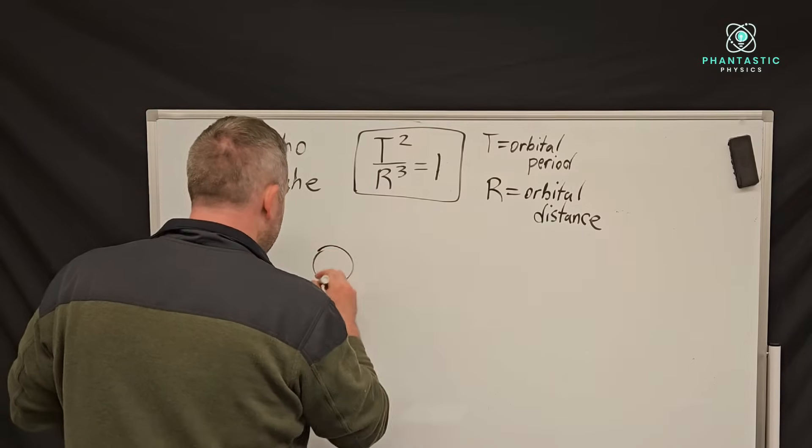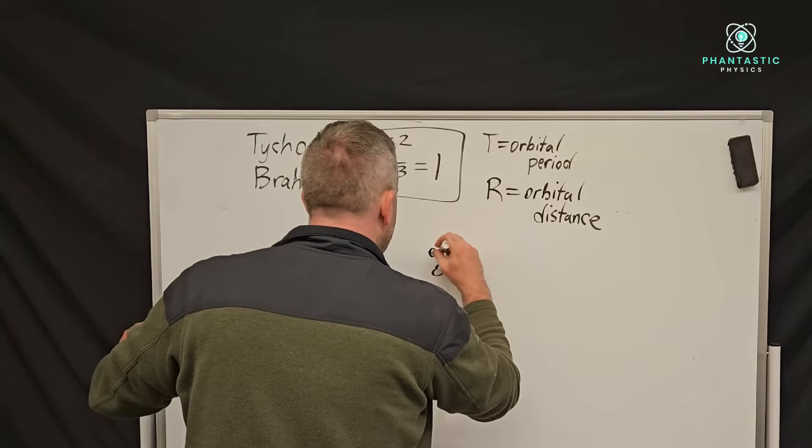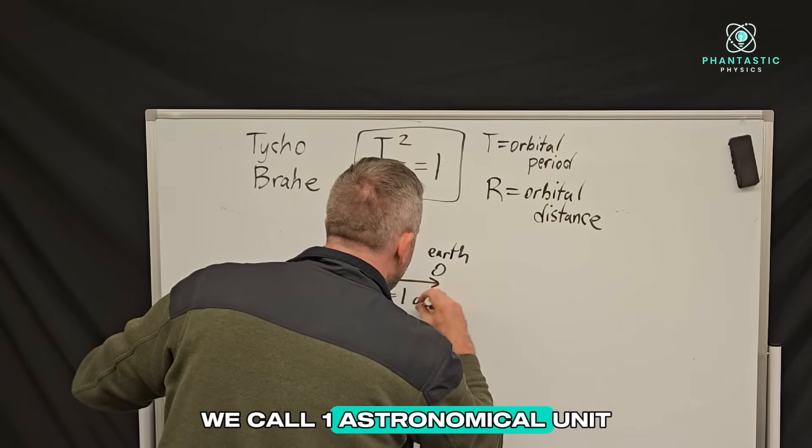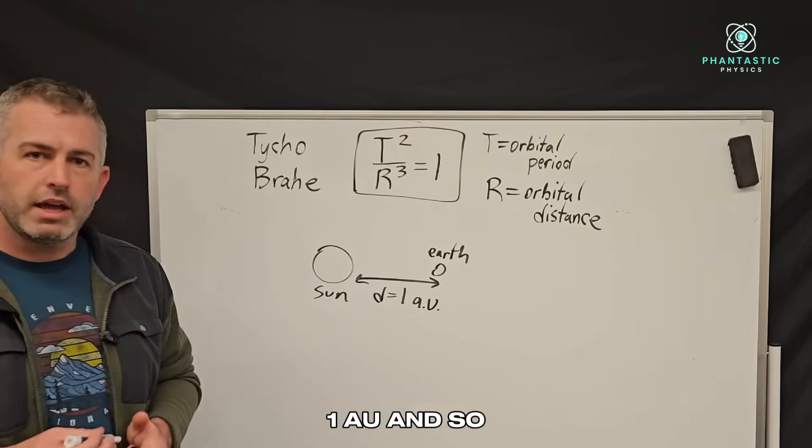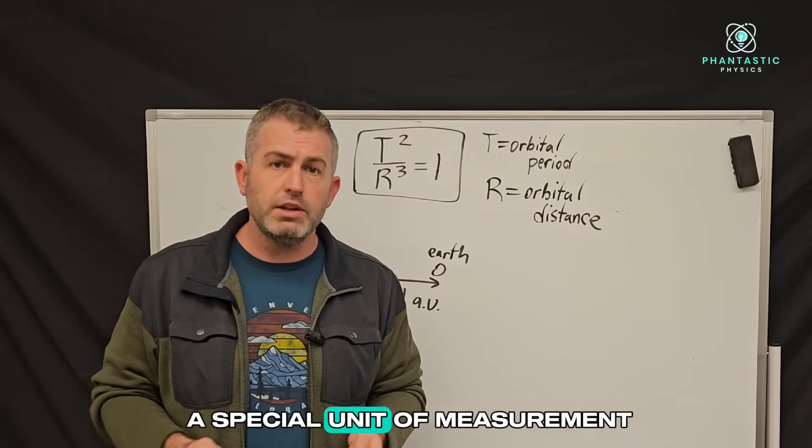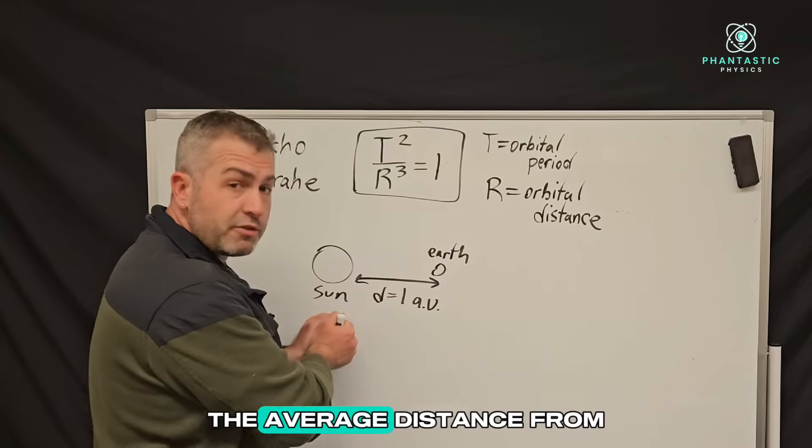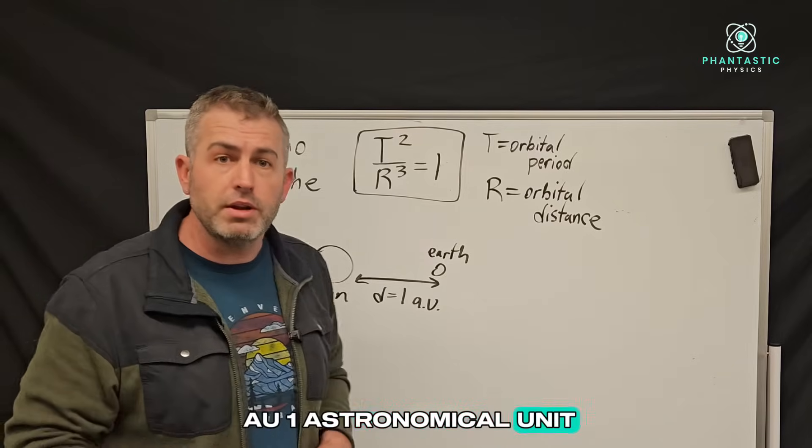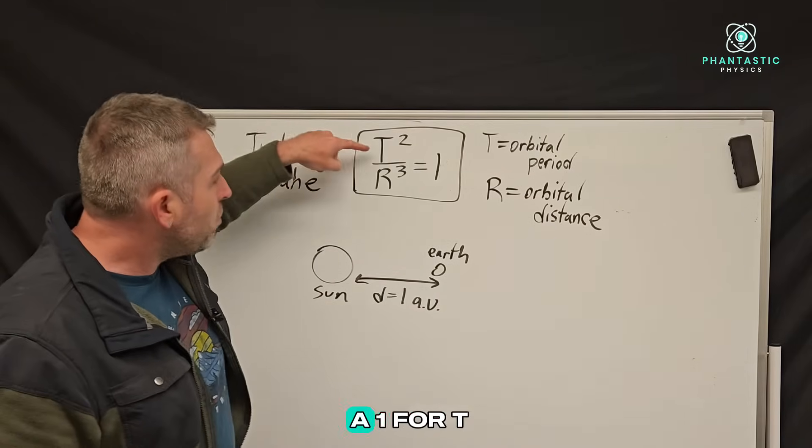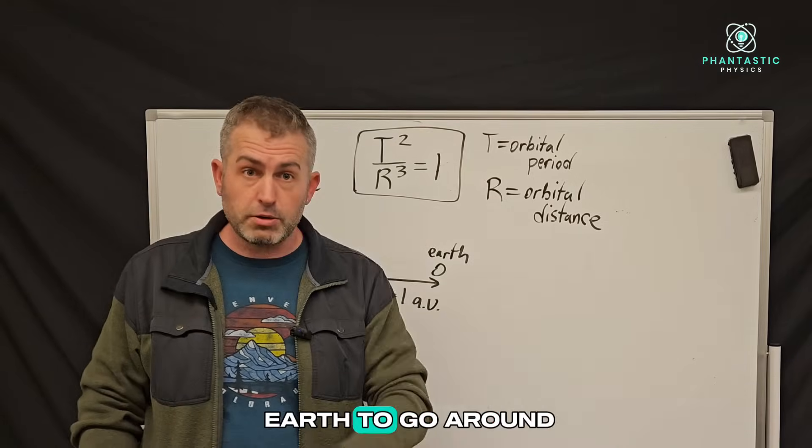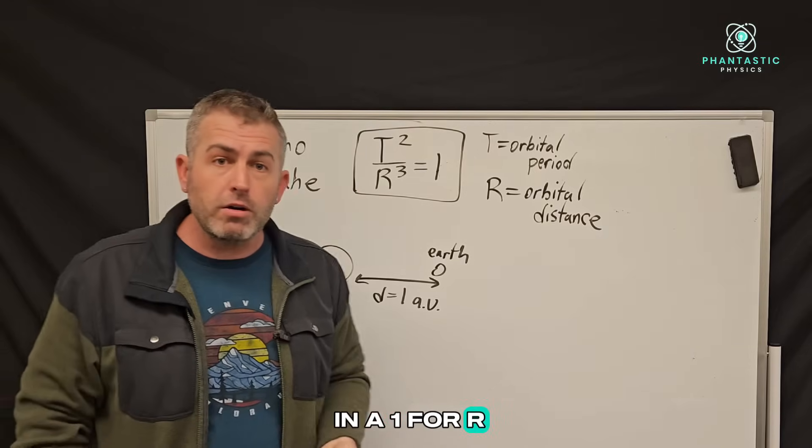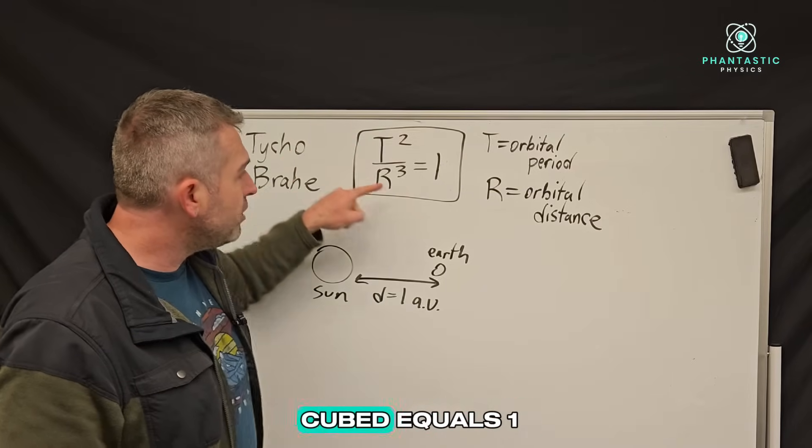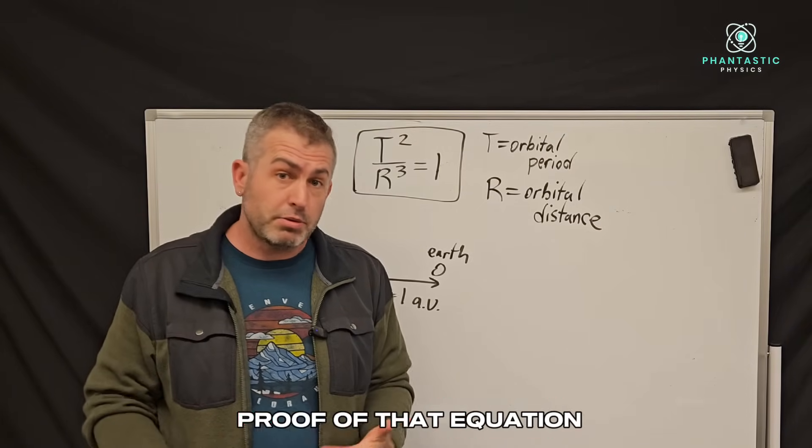Let's say this is the sun, and this is planet Earth here. The distance from the Earth to the sun, we call one astronomical unit, one AU. An astronomical unit is a special unit of measurement that is defined as the average distance from the sun to our planet Earth. We call that one AU, one astronomical unit. So if we were doing this equation for Earth, we would plug in a one for T because it takes one year for the Earth to go around the sun, and we would plug in a one for R because the Earth is exactly one astronomical unit of distance away from the sun. We'd have one squared over one cubed equals one, and that checks out. So there's a simple proof of that equation working.